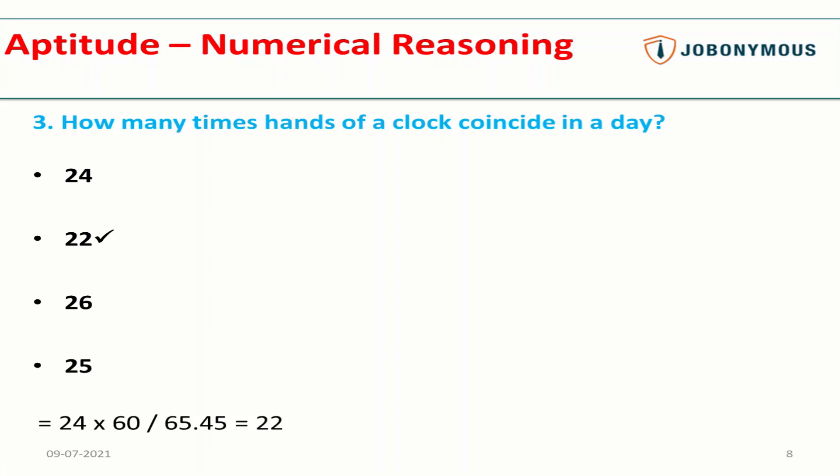The hands of a clock coincide every 65.45 minutes. So the answer is: in one day there will be 24 × 60 minutes, so 24 × 60 divided by 65.45, which comes out to 22. You can just remember that it coincides every 65.45 minutes. Even if they tell you how many times it will coincide in 12 hours, you can just replace 24 by 12, and the answer you will get is 11. This is how you can easily solve this question.